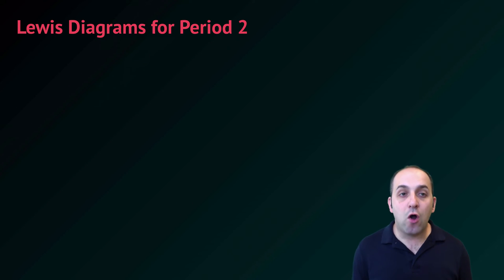Let's see how this works by doing Lewis dot diagrams for all the elements in period 2. Try it on your own first. Pause the video, give it a shot, and when you're ready, let's go through it together.